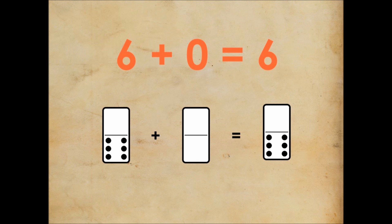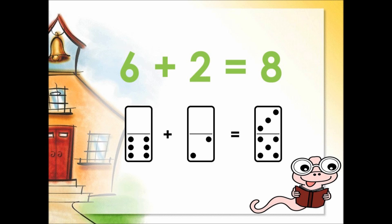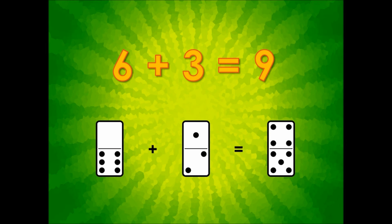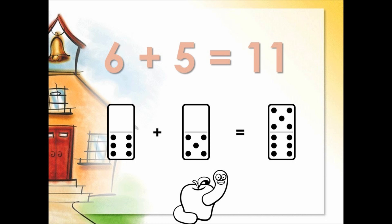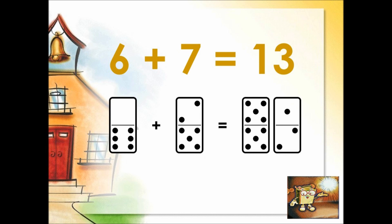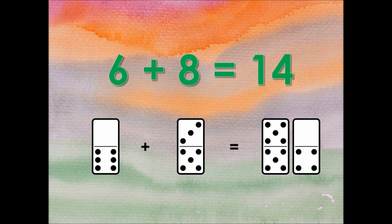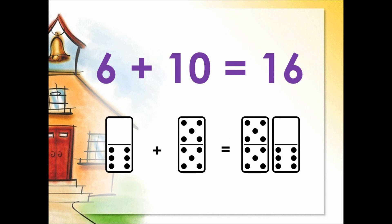Six plus zero is six. Six plus one is seven. Six plus two is eight. Six plus three is nine. Six plus four is ten. Six plus five is eleven. Six plus six is twelve. Six plus seven is thirteen. Six plus eight is fourteen. Six plus nine is fifteen. Six plus ten is sixteen.